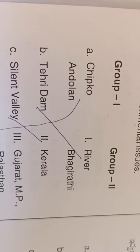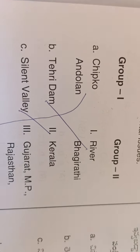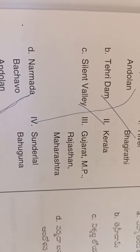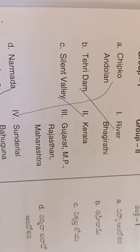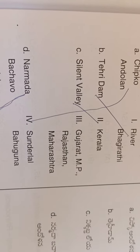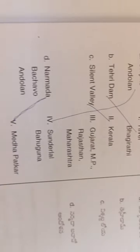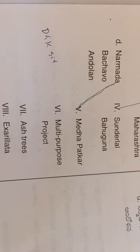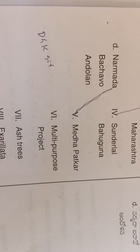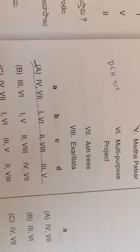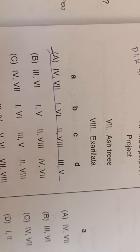Match the group: Chipko Andolan is associated with Sundarlal Bahuguna; Tehri Dam with River Bhagirath; Silent Valley is in Kerala; Narmada Bachao movement is linked to Medha Patkar. The answer is option A.